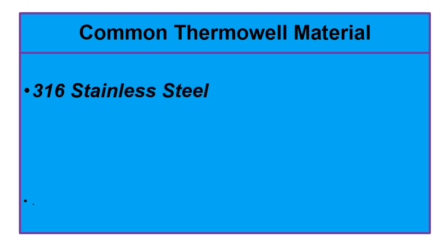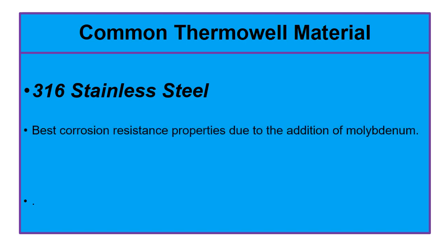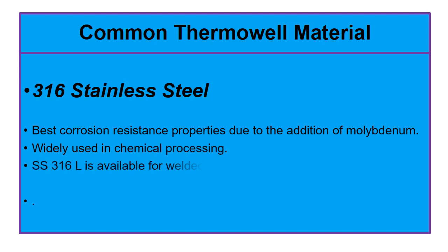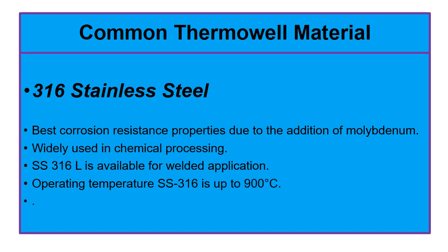SS 316 stainless steel has the best corrosion resistance properties due to the addition of molybdenum. SS 316 is widely used in chemical processing. An SS 316L version is also available for welded applications. The maximum operating temperature of SS 316 is up to 900 degrees centigrade.